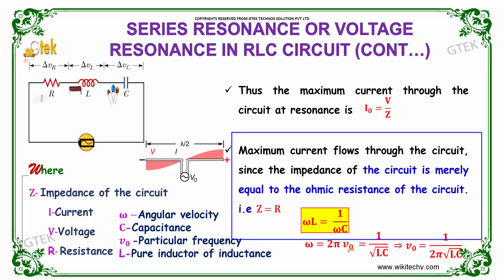That's nothing but omega equals 2 pi nu naught equals 1 by root LC. So nu naught equals 1 by 2 pi root LC.